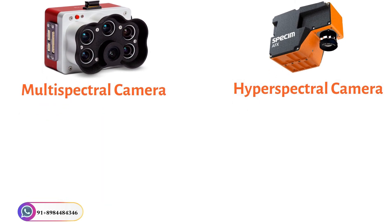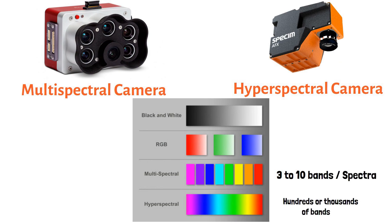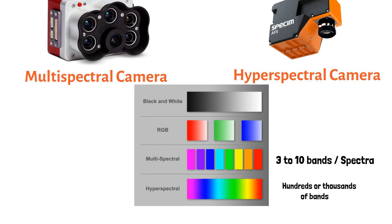RGB camera or day camera uses 3 bands, red, green, and blue. Similarly, multispectral camera uses 3 to 10 bands and hyperspectral camera uses 100 to 1000 bands.